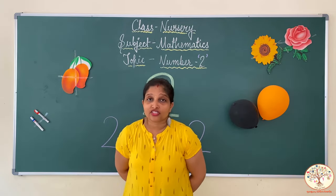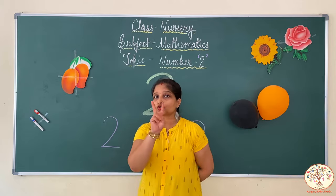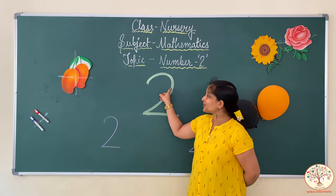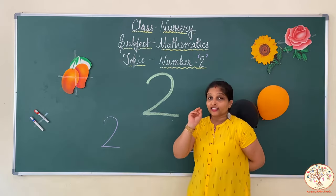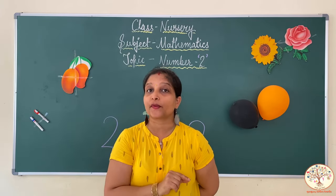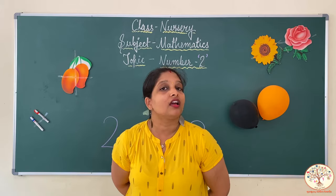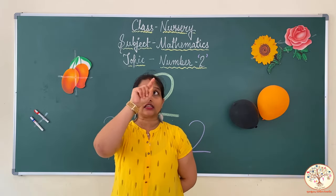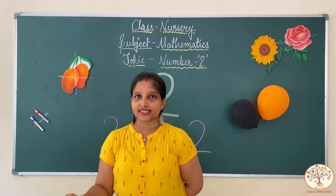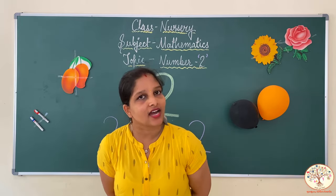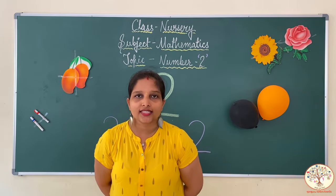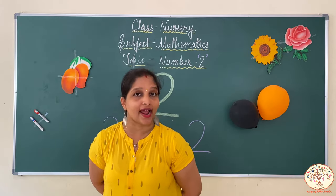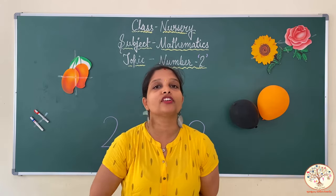Now kids, after counting we learnt how number 2 looks like — number 2 is like a curve and a sleeping line. Then we learnt how to write number 2: first in the air, then on the sand, and last but not the least, on our slate. I hope you all understood all about number 2. You need to practice writing number 2 at home with the help of your parents.